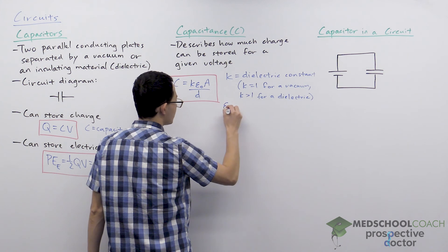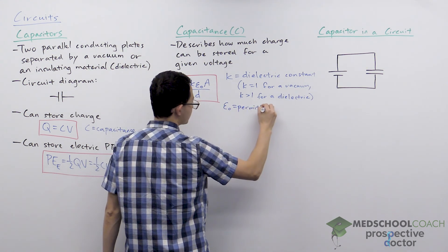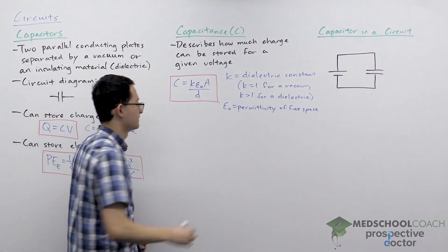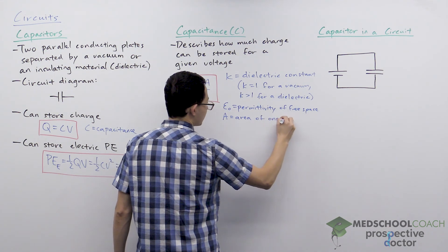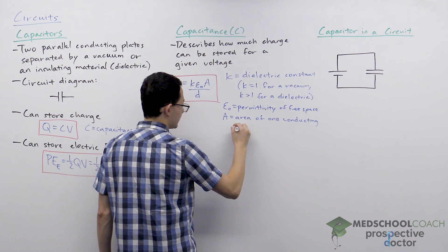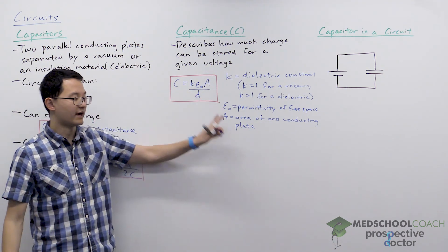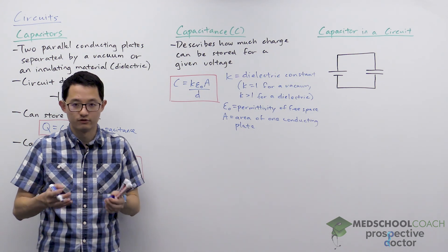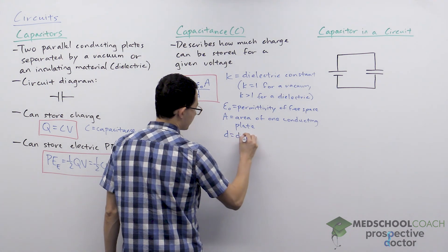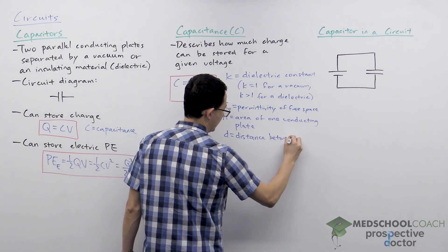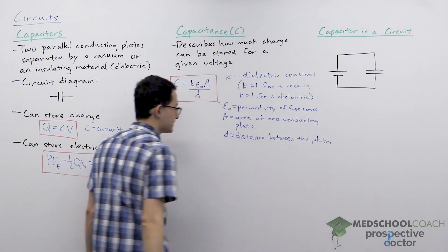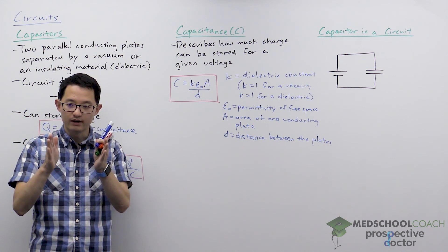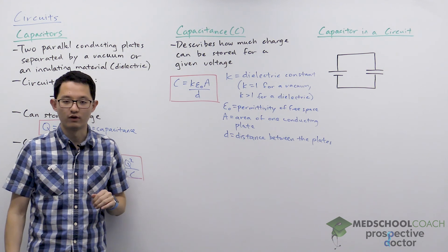Epsilon naught is the permittivity of free space — a constant you do not need to have memorized for the MCAT. A is the area of one conducting plate. The capacitance is directly proportional to the area of one conducting plate, which makes sense because larger plates can store more charge. D is the distance between the plates, and capacitance is inversely proportional to that distance. The farther apart the plates, the lower the capacitance, and the less charge you can store for the same voltage.